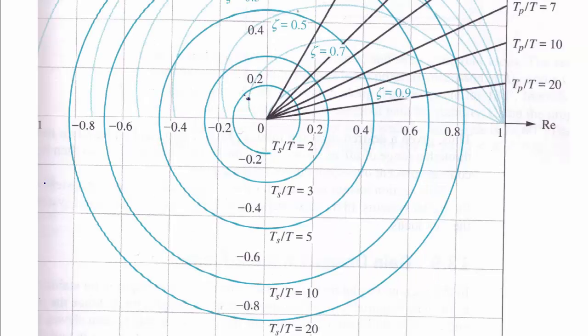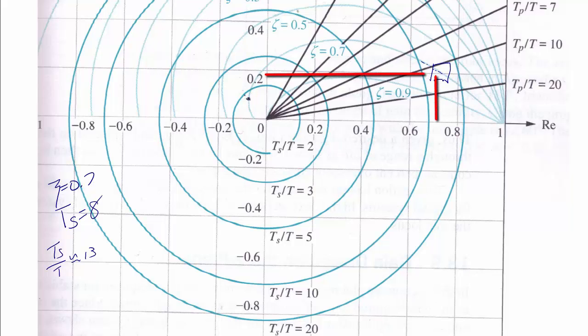So now if I go to my other design chart, I know that we want zeta to equal 0.7, and our settling time to equal 8. So ts over t, because remember, t is 0.6, is approximately 13. So I am somewhere outside of this curve here, and here is zeta equal to 0.7. So if I put my box here, I see that I want my closed loop pole, similar to the other chart, to be 0.7 plus or minus j 0.2.